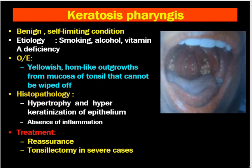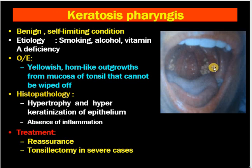Keratosis pharyngeus is a benign, self-limiting condition with presence of horn-like outgrowths from the mucosa of the tonsils that cannot be wiped off. It is caused by smoking, alcohol, or vitamin deficiency. On histopathology, there is hypertrophy and hyperkeratinization of the epithelium with absence of inflammation. Patients present with horn-like outgrowths, sometimes large. Keratosis pharyngeus does not usually require treatment; the patient must be reassured, and tonsillectomy is performed only in severe symptomatic cases.